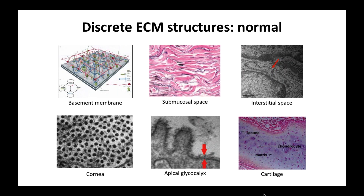This is a picture of the submucosal space of a duct, applicable to almost anywhere in the body. Collagen fibrils are stained in pink — you can see very dense fibrils with space in between. This is a large interstitial space with fluid flowing through very large collagen bundles. This smaller interstitial space, highlighted with the red arrow, is between two cells in the liver. In this space there's a lot of matrix, and that determines how fluid and other materials flow between cells.